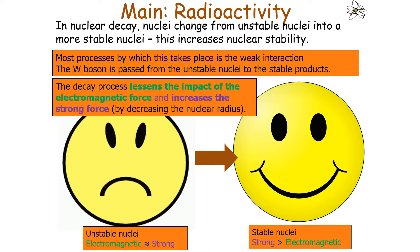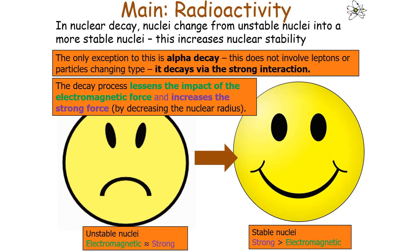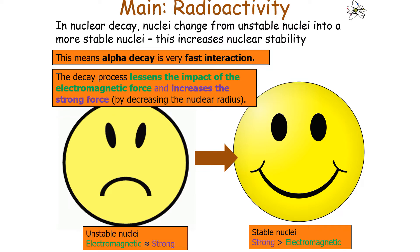Most decay processes take place via the weak interaction, where a W boson is passed from the unstable nucleus to its stable products. This lessens the electromagnetic force and increases the strong interaction by decreasing the nuclear radius. The only exception is alpha decay, which doesn't involve leptons or quarks changing type — it decays via the strong interaction, making alpha decay a very fast interaction.